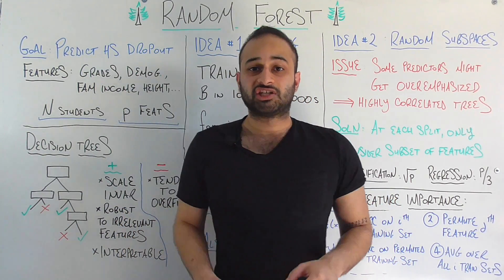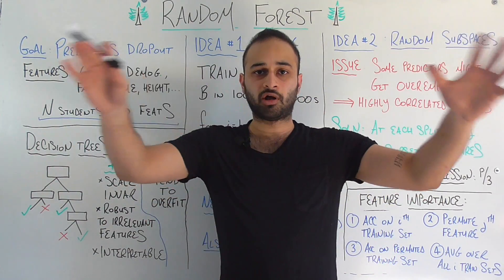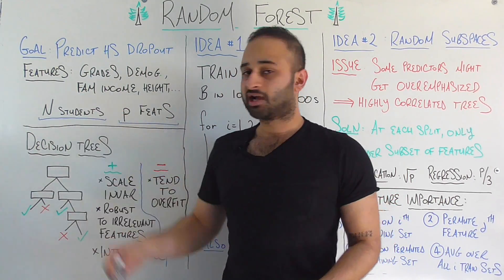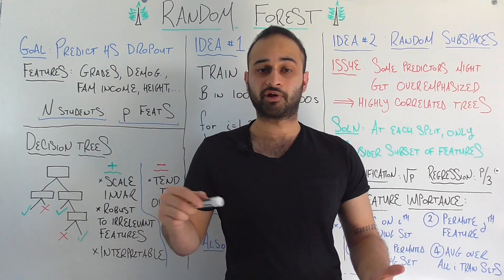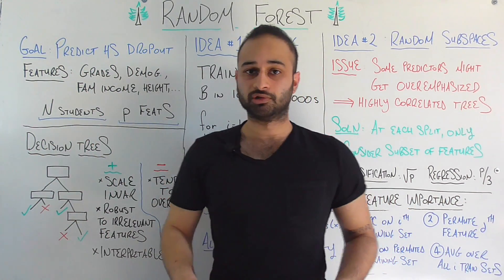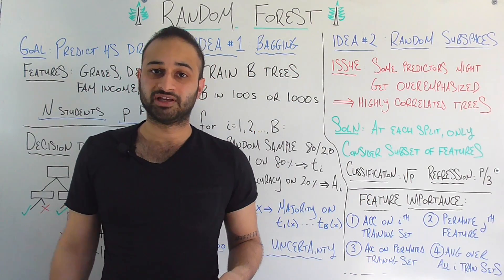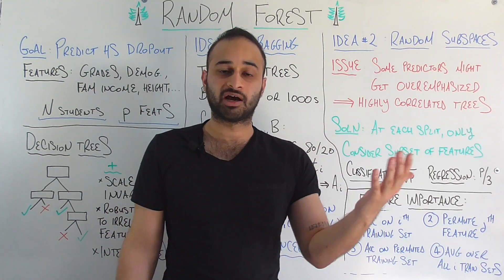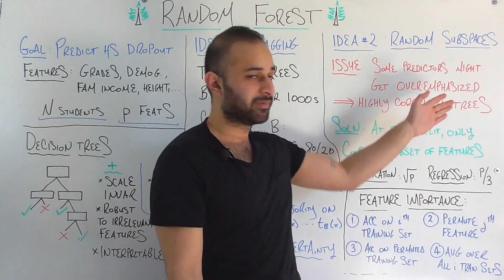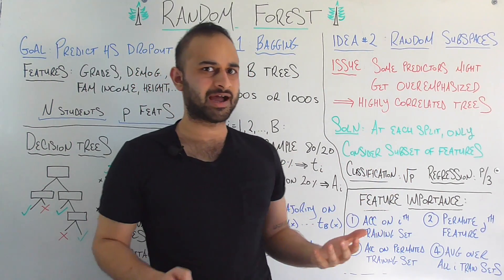Now there's one more problem we need to address. It's possible that some features are more important for this set of N students, but that doesn't generalize well to the overall high school student population. For example, let's say family income is really important for predicting dropout in our N students, but in general family income is not as important. This means that even though we're training many trees with different 80-20 splits, we're probably going to end up with family income as an important feature in most or all of our decision trees, making our trees highly correlated.